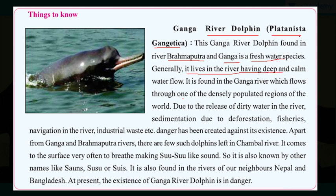Due to release of dirty water, sedimentation from deforestation, fisheries, irrigation and industrial waste released into the river, this animal is about to face extinction very soon. Apart from Ganga and Brahmaputra, there are few such dolphins left in the Chambal river. It comes to the surface very often to breathe, making a susu-like sound — and just for this it has another name, susu or sus. It is also found in rivers of our neighbors Nepal and Bangladesh. At present, the existence of the Ganga river dolphin is endangered.